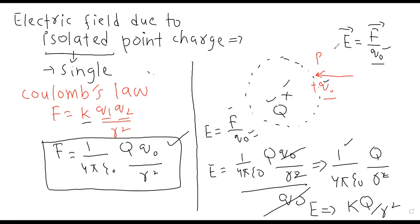So this is the equation for electric field intensity due to isolated point charge — ek akeli charge jo electric field generate karwayegi uski intensity barabar hogi K Q divided by R square. That's all about electric field intensity. Jo hum ne previous class mein discuss kiya tha, aaj hum ne uske kuch extra points discuss kar liye jo numericals mein zyada tar use honge.